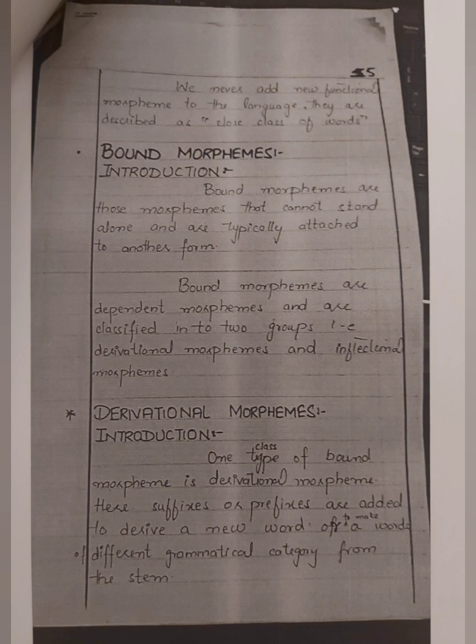Now towards the bound morpheme: they cannot stand alone and are typically attached to another form — a stem word. Bound morphemes are classified into two types: derivational morpheme and inflectional morpheme. For derivational morphemes, they are attached to specific words. Within these we have suffix, prefix, infix, or affixes as a whole, and they are also called circumaffixes.